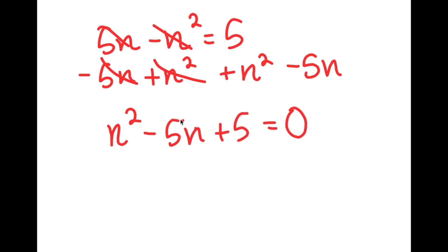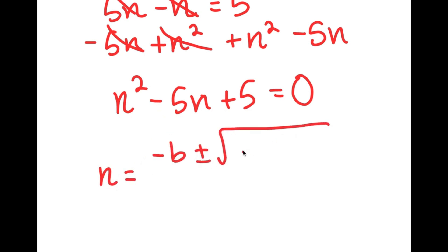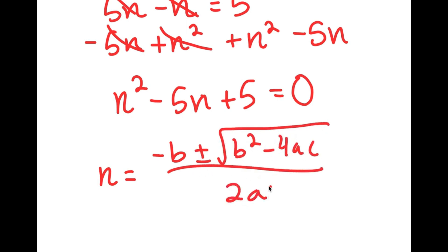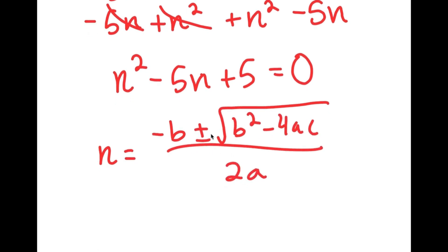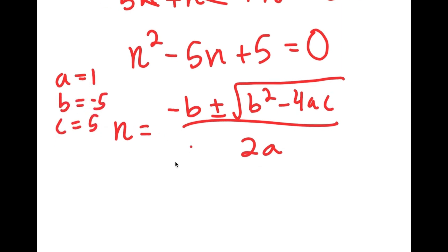To solve this, I can use the quadratic formula, which is negative b plus or minus the square root of b squared minus 4ac, all over 2a. In this case, a is 1, b is negative 5, and c is positive 5.